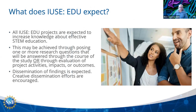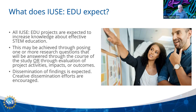The IUSE program has a couple of things it expects from the projects it supports. We really want projects to increase what we know about effective STEM education. At our heart, we are a research program, so we expect some sort of knowledge generation. This can be through proposing research questions related to STEM education, answered through the course of the proposed study, or through evaluation of project activities, impacts, and outcomes. We also expect projects to make findings available to the educational community — through journal publications, conference presentations, and especially creative dissemination efforts beyond those standard activities.